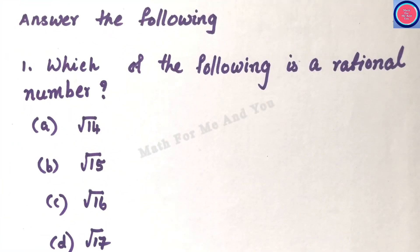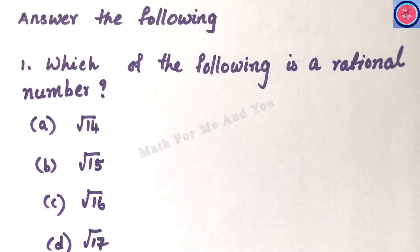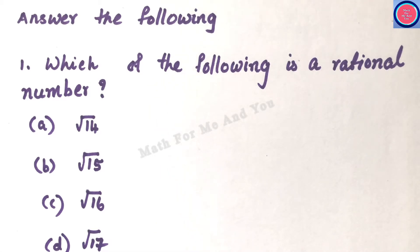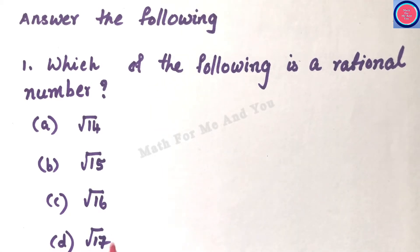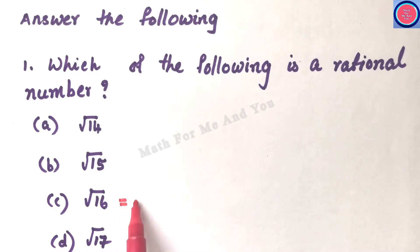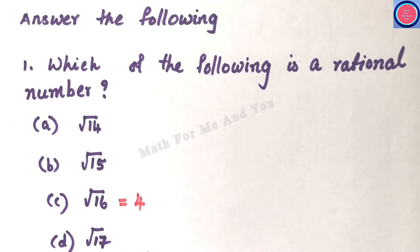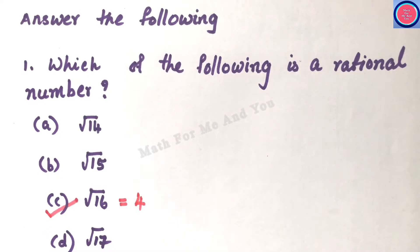MCQ Q1: Which of the following is a rational number — √14, √15, √16, or √17? All options are root numbers, but option C, √16, has 16 as a perfect square, so √16 = 4, which is a natural number and also rational. Option C is the correct answer. All other root numbers here are irrational.